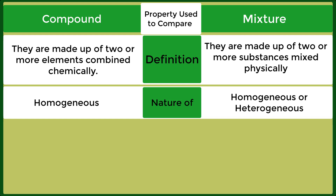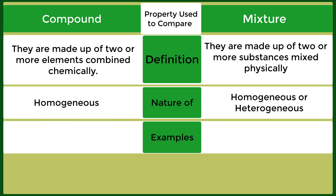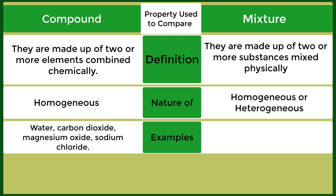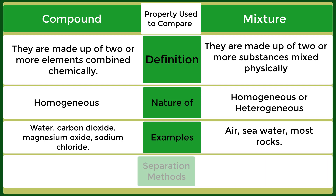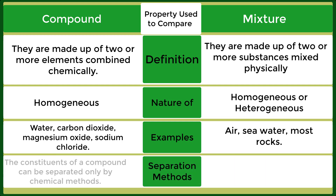Nature of compound: homogeneous. Nature of mixture: homogeneous or heterogeneous. Examples of compound: water, carbon dioxide, magnesium oxide, sodium chloride. Examples of mixture: air, sea water, most rocks.